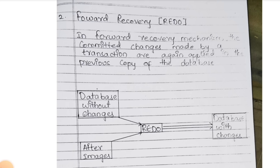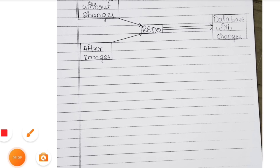REDO is the forward recovery technique. Do you need to permanently delete a photo? Like permanent delete — we can also delete some apps. Dumpster. Okay, whatever it might be. So this is about the fourth unit. Any doubts? Update the notes. Thank you.